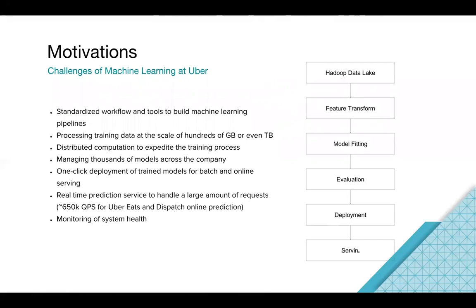There are many challenges in solving very different, complex use cases at Uber. For example, the dataset — we need to support processing of hundreds of gigabytes or even terabytes of data because data usually crosses hundreds of cities. We also have very complex workflows. This graph represents the most simple ones, but at Uber, people usually train very large ensemble models and their training pipeline can span very different computing environments or even clusters.